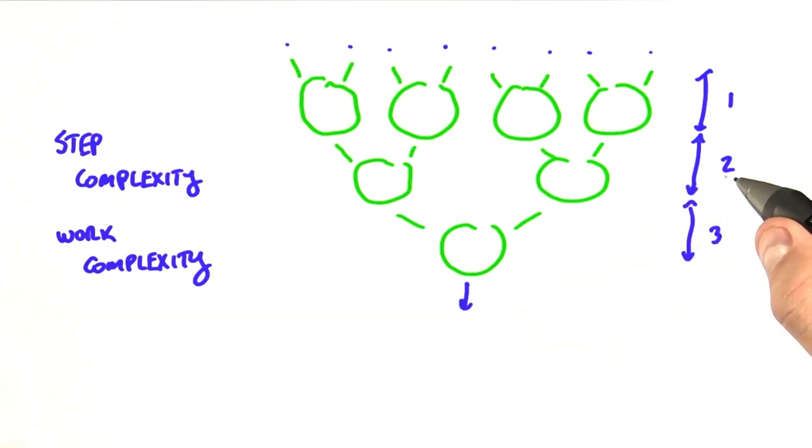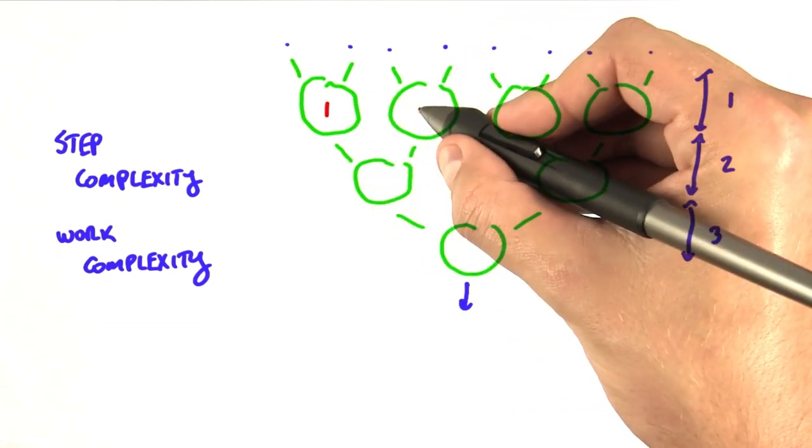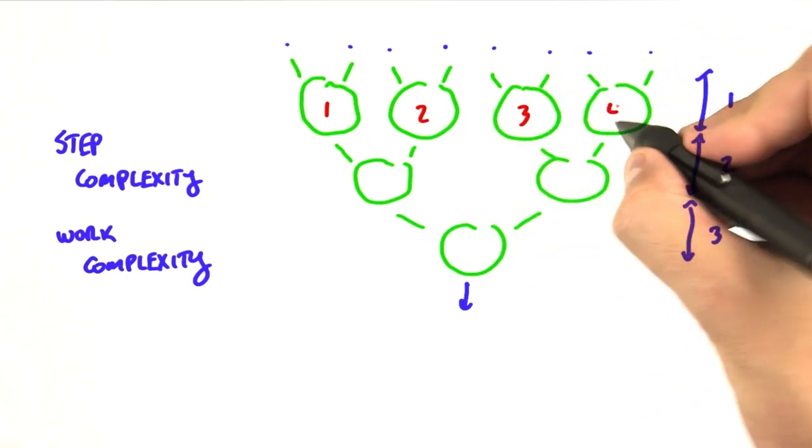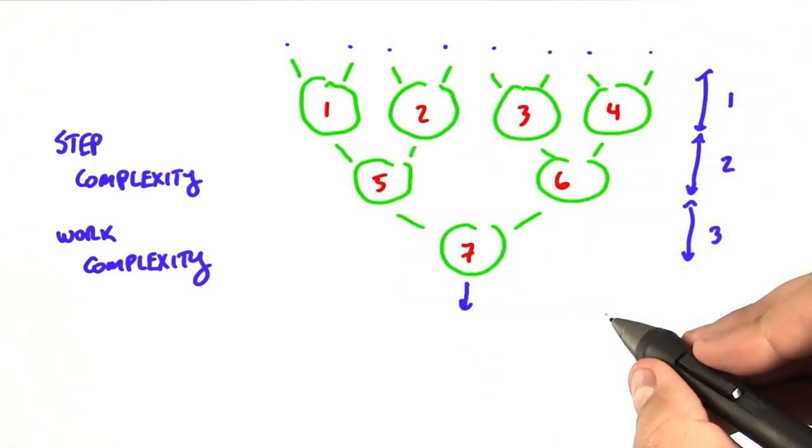But we can also count the total amount of work that we've done here. We've done one, two, three, four, five, six, seven operations.